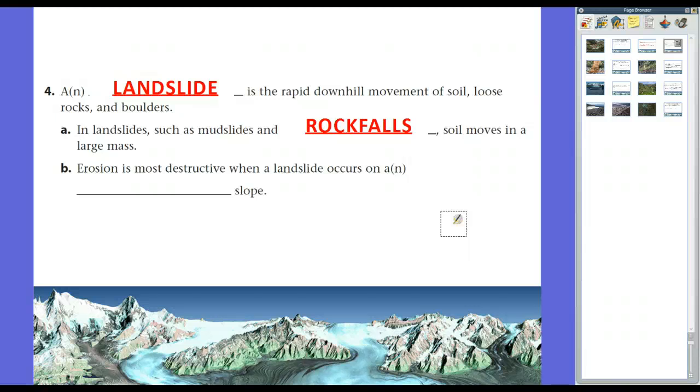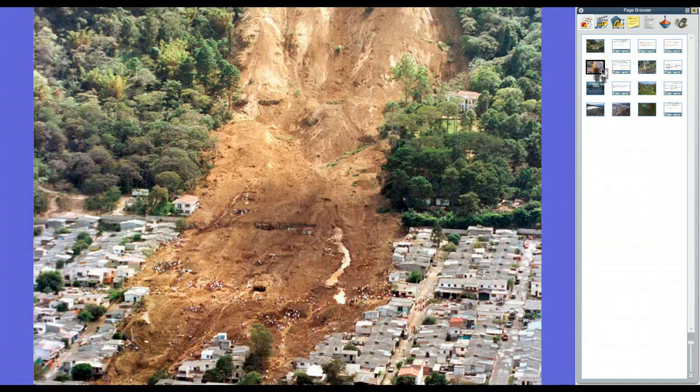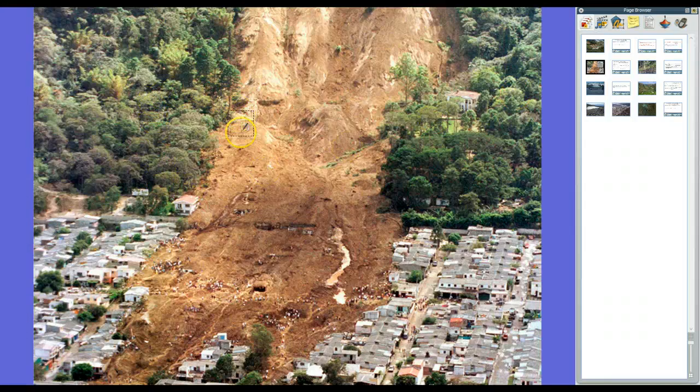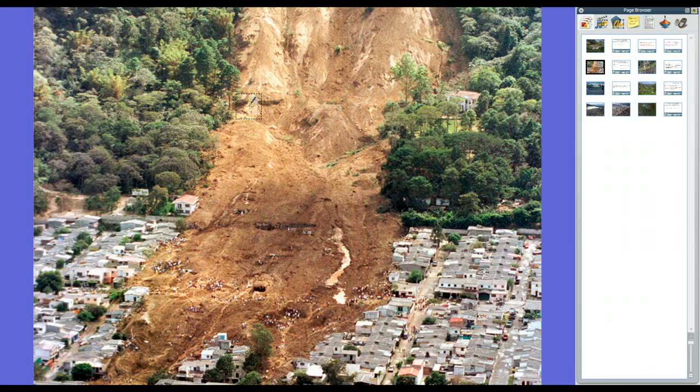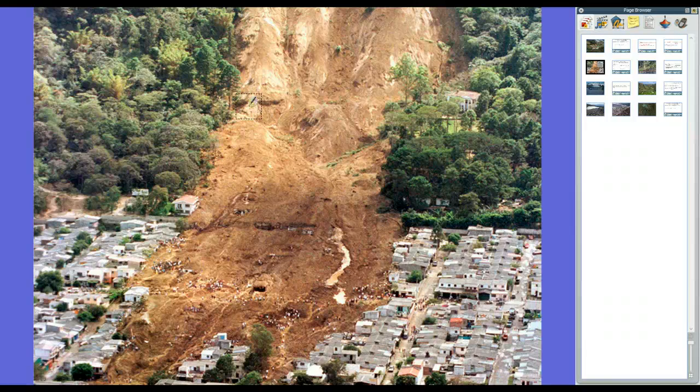And that's essentially erosion because what happened is gravity is pulling on these rocks and dirt and it's just pulling it along. And it comes down. Now, erosion is most destructive when a landslide occurs on a steep slope, just like in this photo I just showed you right here. This was a relatively steep slope in El Salvador. A lot of rain fell. Well, vegetation wasn't enough to hold it down and bam, there it goes. And it comes down really quickly.